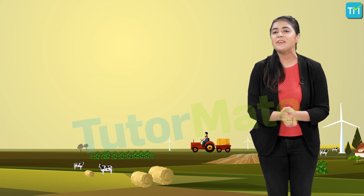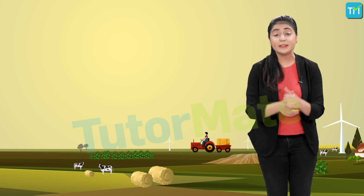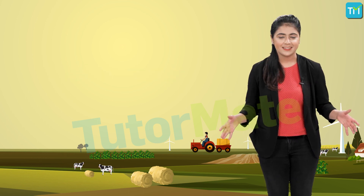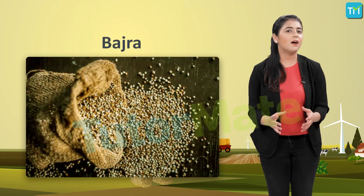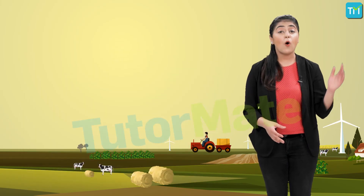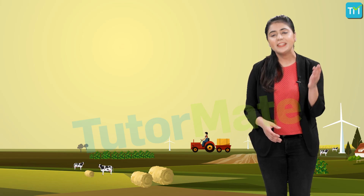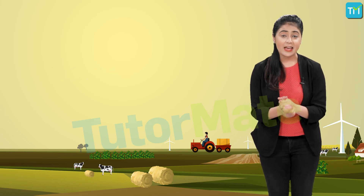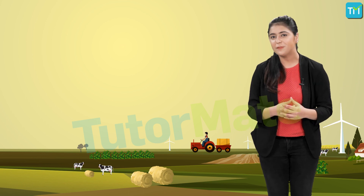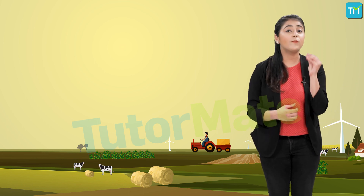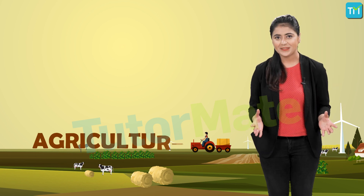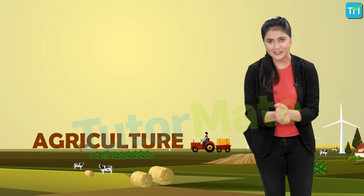These raw materials are then carried forward to make the finished products that reach us in the markets. Wheat, bajra, maize, rice, and sugarcane are all processed further to give us the final goods. All the activities performed in the farms fall under the purview of agriculture, and that is our topic for this video.